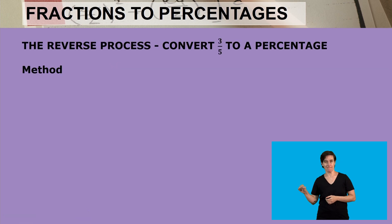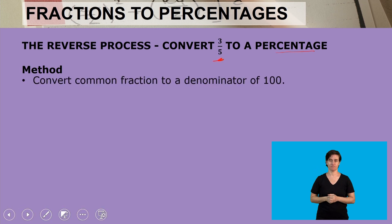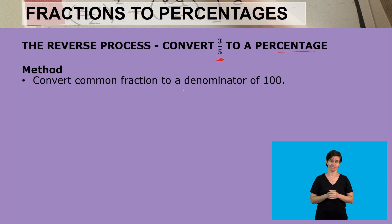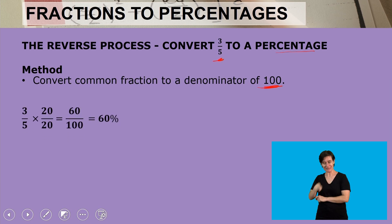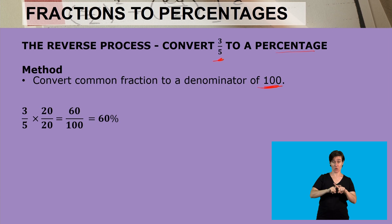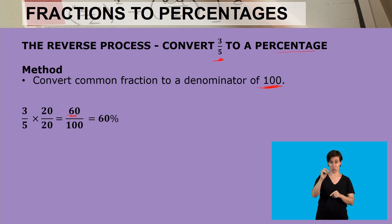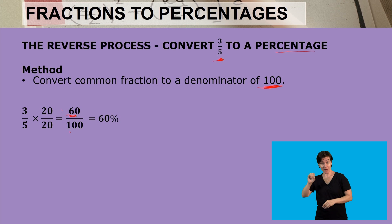Now let's look at the reverse process, where we are given a fraction and we are to convert it to a percentage. When converting to a percentage, always convert the common fraction to a denominator of a hundred, because that hundred helps us interpret the percentage. Here's one: three-fifths multiplied by twenty over twenty. Three multiplied by twenty becomes sixty, and five multiplied by twenty becomes a hundred. Because our denominator is a hundred, the numerator becomes the percentage — so sixty percent.